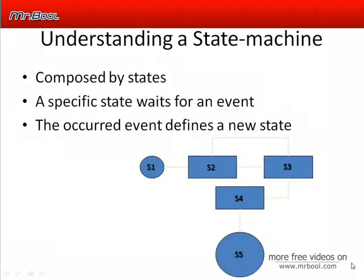To understand why we have a state machine workflow in Workflow Foundation, let's understand what a state machine is. A state machine is composed of states, and it can have just one active state at a time. In one state you can define transitions to other states. You define an event, and the event defines the new state. In this picture we have the initial state — a state machine always must have an initial state.